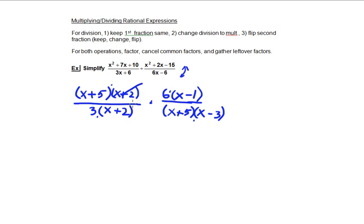So I can cancel the factors x plus 2, and I can also cancel the factors x plus 5, and I can even cancel the factors 6 and 3. So dividing 6 by 3, I end up with a remaining factor of 2. 3 divided by 3 only leaves me with a factor of 1.